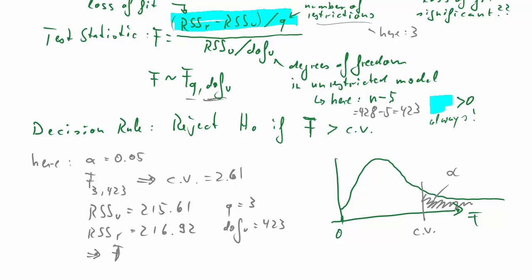Then we just need to plug in these four numbers into our F-statistic. Once you do that, you get a value for the F-statistic based on our data of 0.8567.